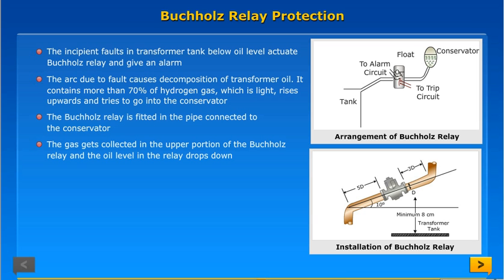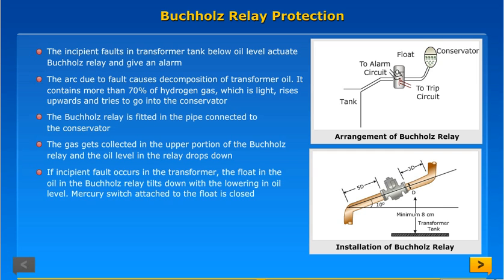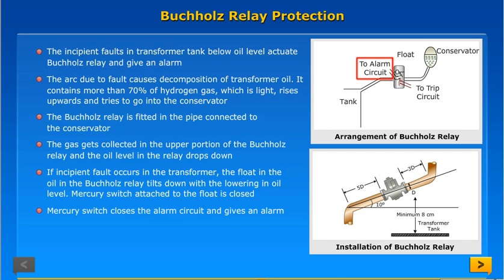The gas gets collected in the upper portion of the Buchholz relay and the oil level in the relay drops down. If an incipient fault occurs in the transformer, the float in the Buchholz relay tilts down with the lowering in oil level. The mercury switch attached to the float is then closed, completing the alarm circuit and giving an alarm.